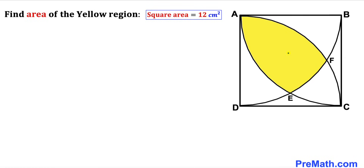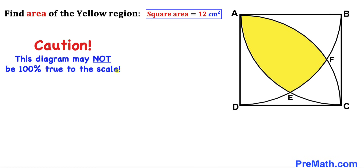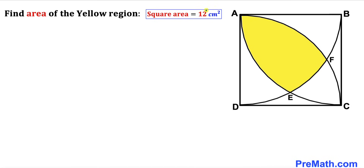Welcome to pre-math. In this video we have got three identical quarter circles fully inscribed in a square ABCD, such that the area of this square ABCD is 12 centimeters square. Our task is to calculate the area of the yellow shaded region. Please don't forget to give a thumbs up and subscribe. Keep in mind that this figure may not be 100% true to scale.